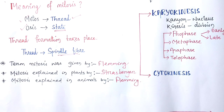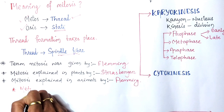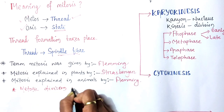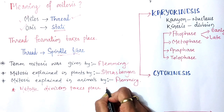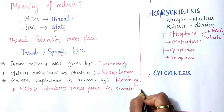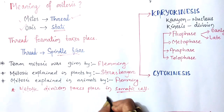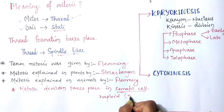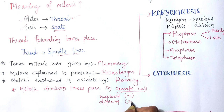Mitotic division takes place in somatic cells. These somatic cells may be haploid, that is N, or diploid, that is 2N.